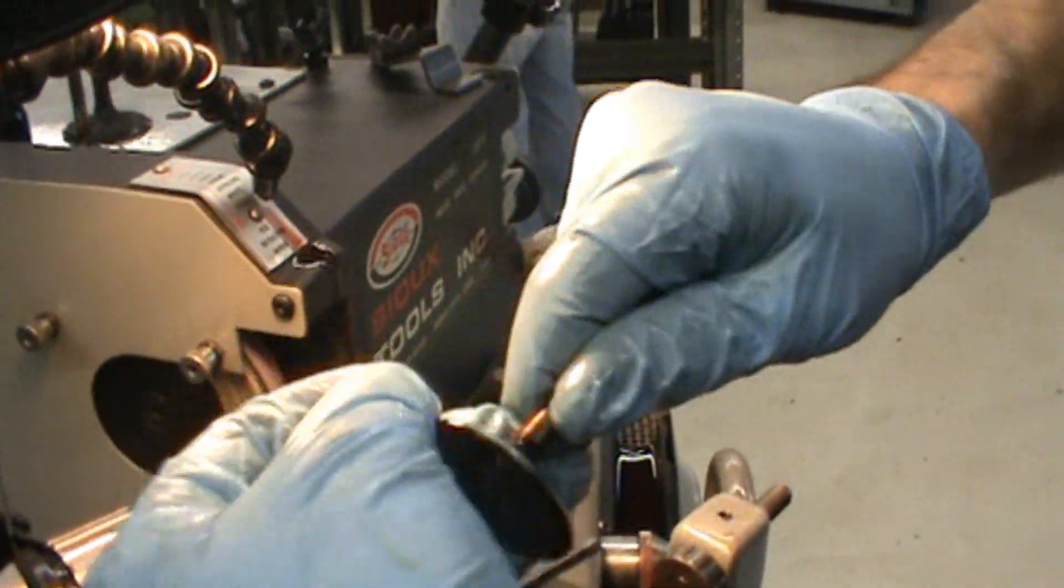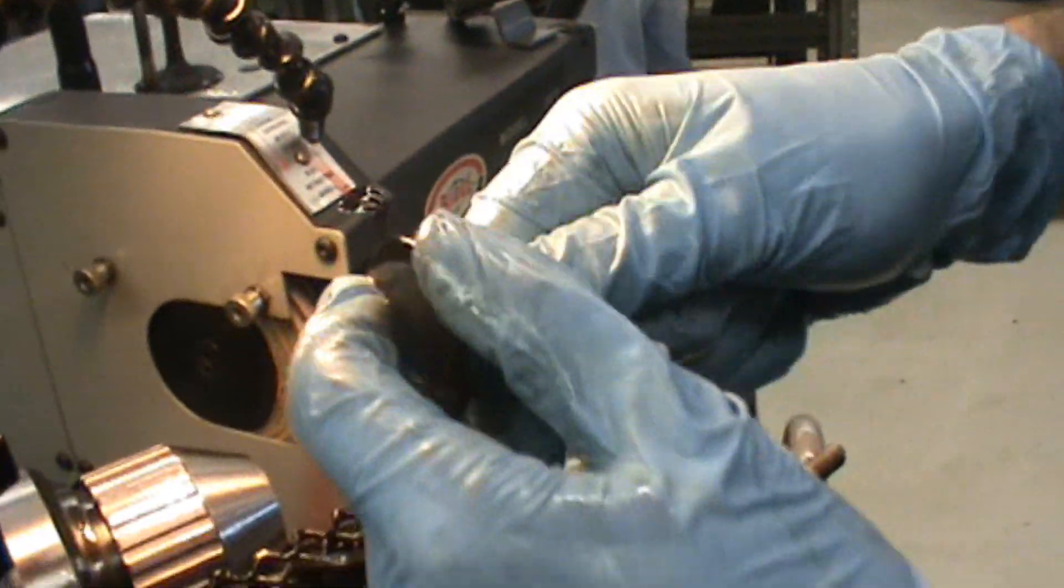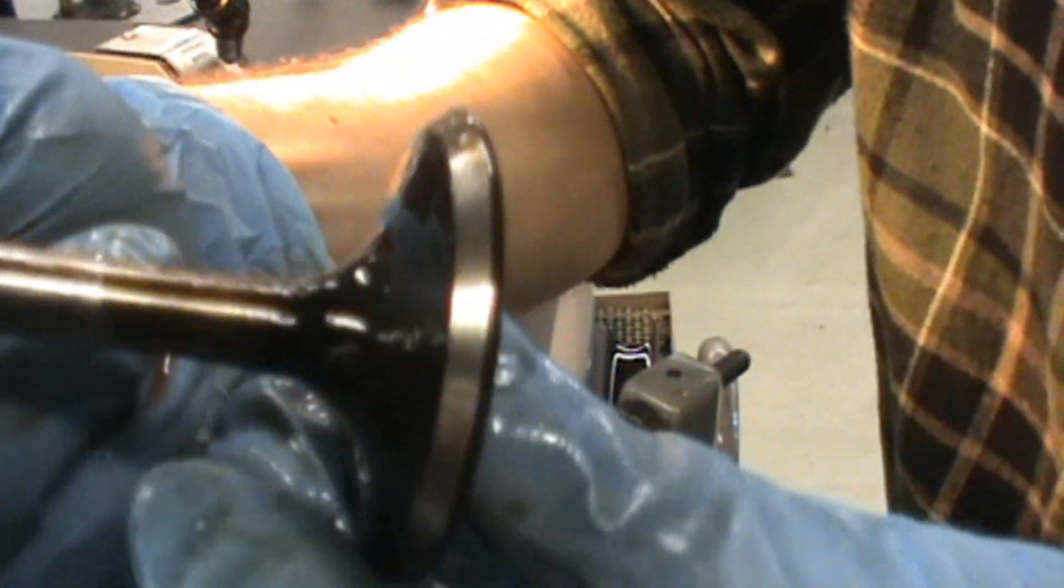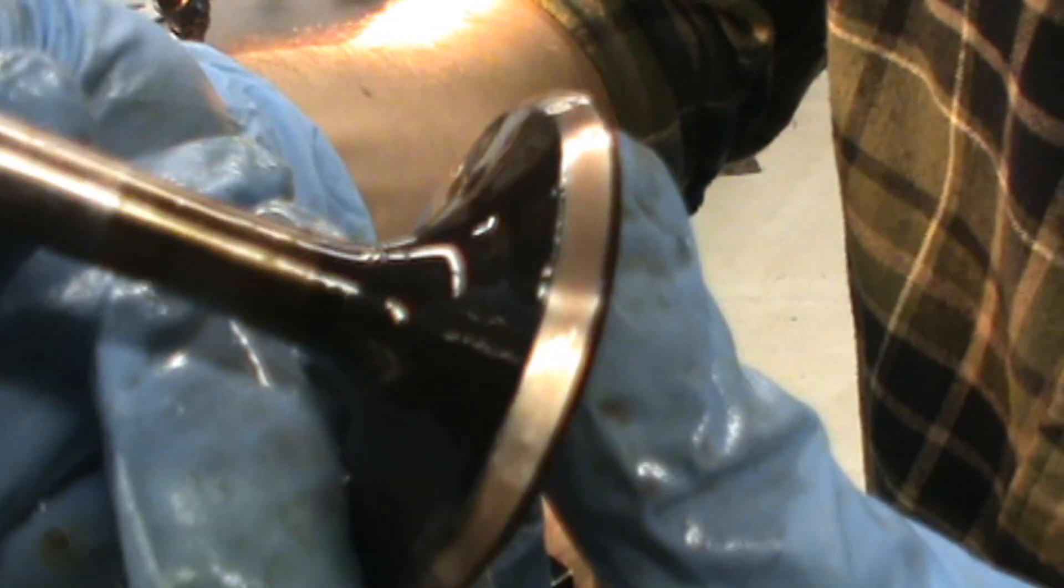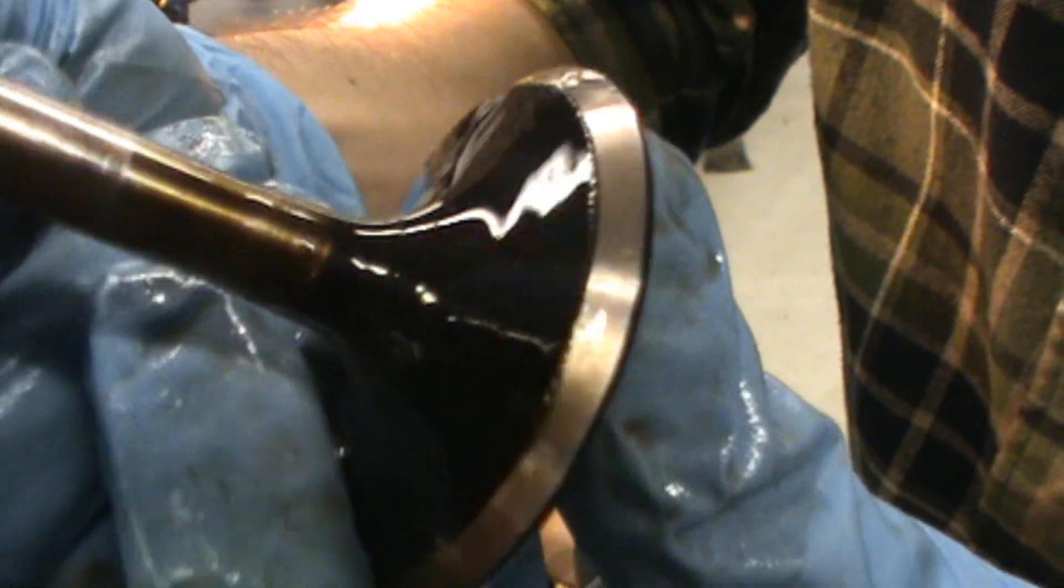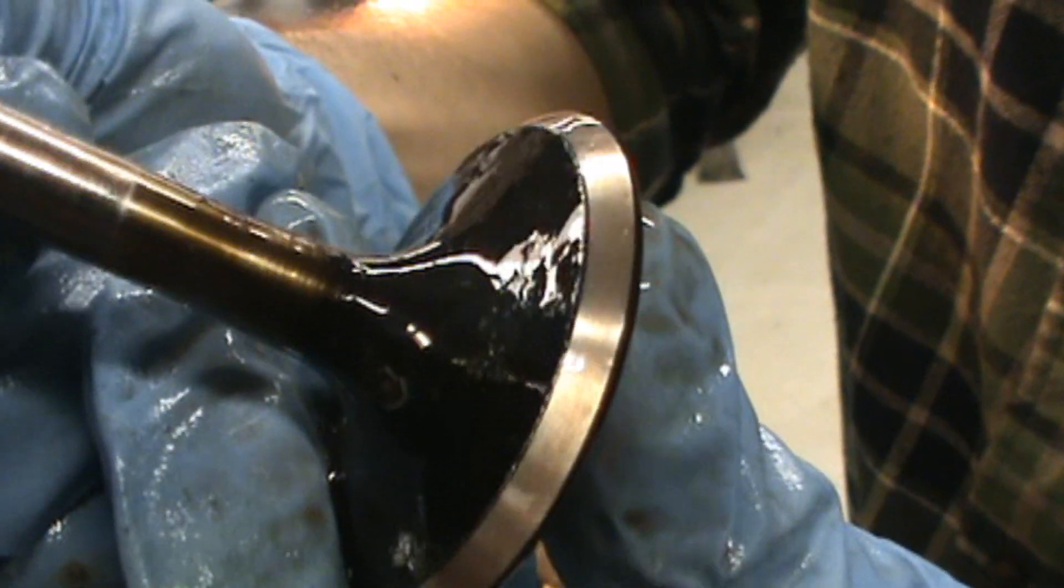Now what we want to do is clean the valve off and check for any scratch marks, cuts, any pits in there. Especially if it's a used valve, you can grind off all the pits. And this one actually looks pretty good.